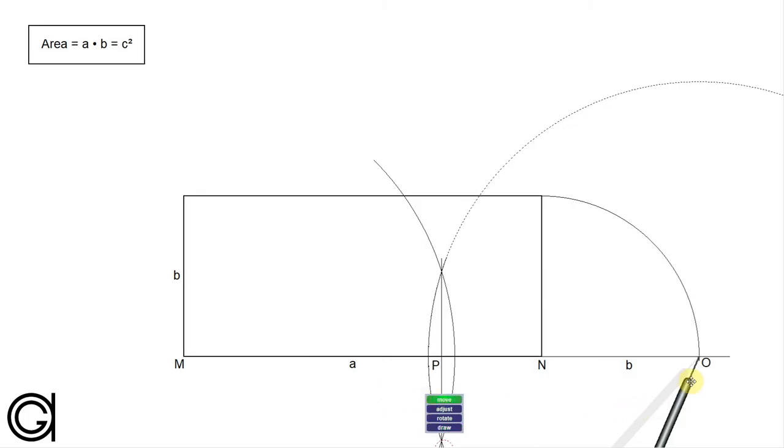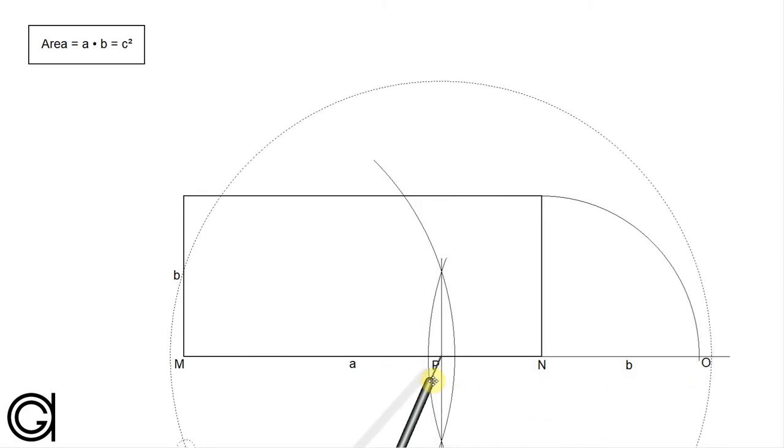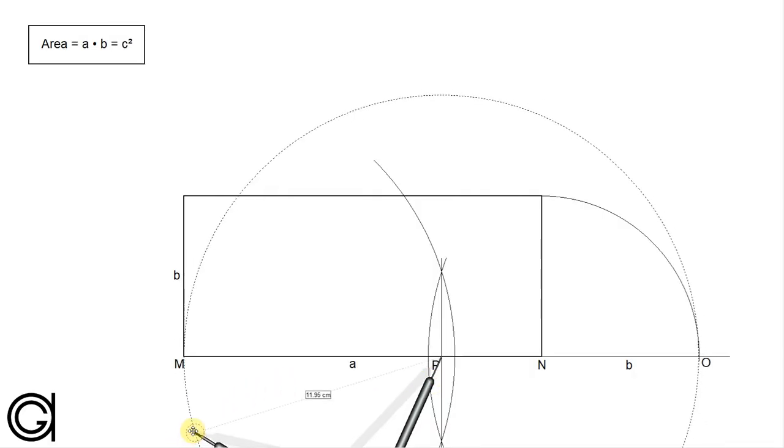Okay, so now the next step with the compass set on midpoint p and with the radius p m, we are going to draw a semicircle as shown here.